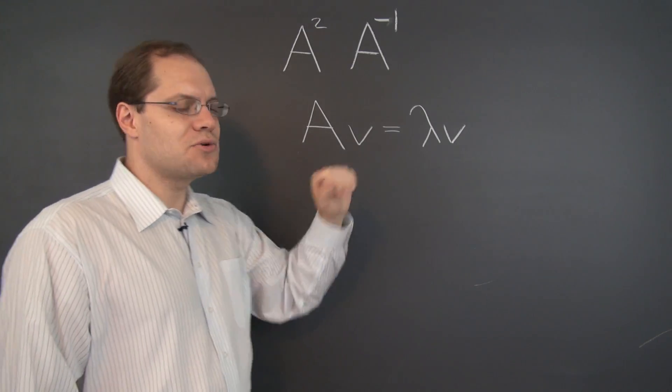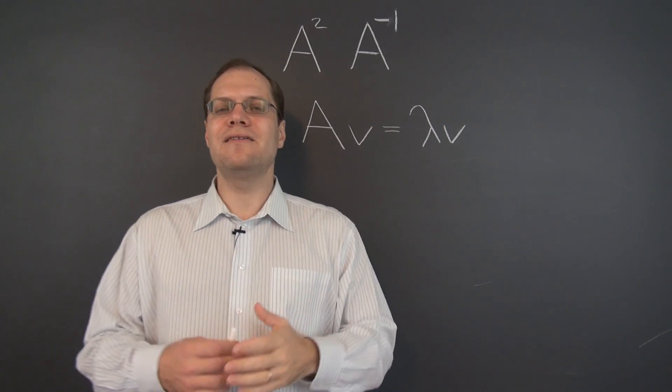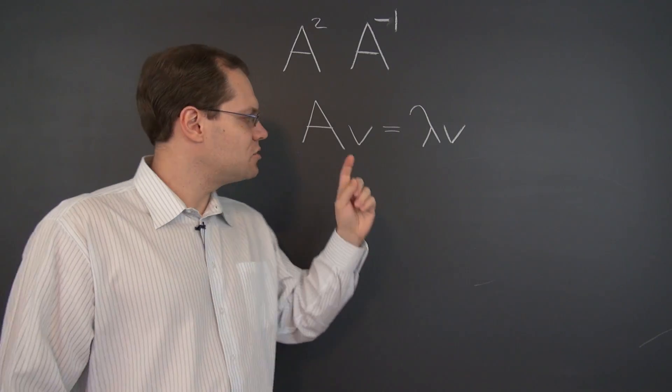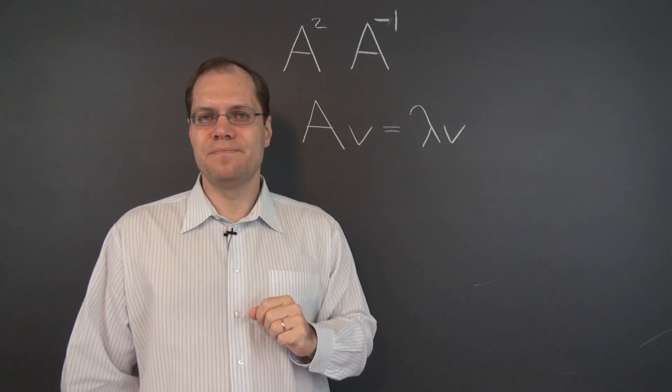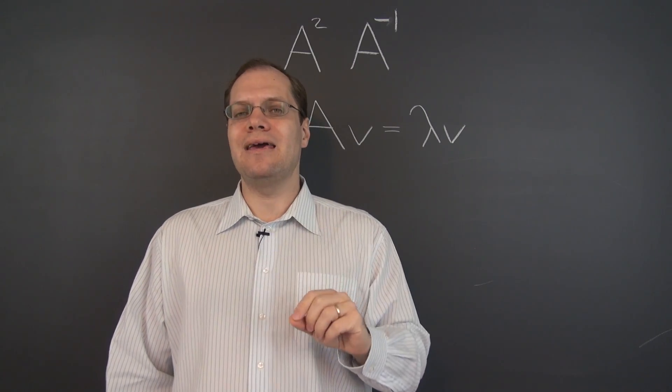Let's use this equation as our starting point. This tells us that lambda and V are the eigenvalue-eigenvector pair associated with the matrix A. Now let's multiply both sides of this equation by A on the left.